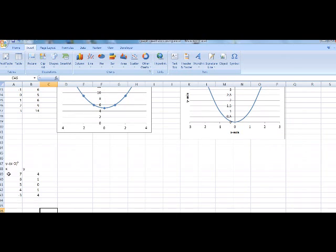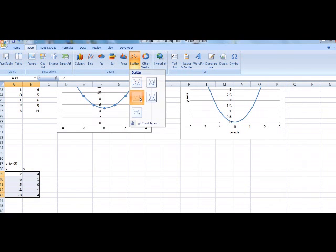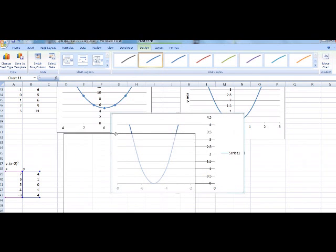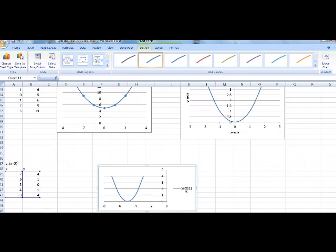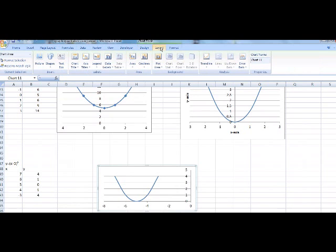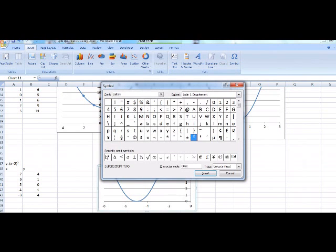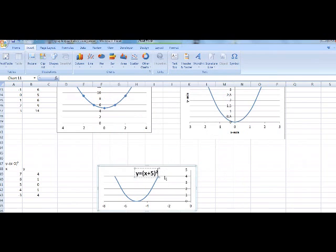In order to do this, I'm going to highlight my points. Left click, drag and drop. Insert, scatter, and graph. There's my graph. I did one with smooth lines this time. I made it a little smaller. I'm getting rid of the series. I'm going to put a title in there. Go to layout, chart title, center overlay. This is y equals x plus 5 raised to the second power. Here's my graph.